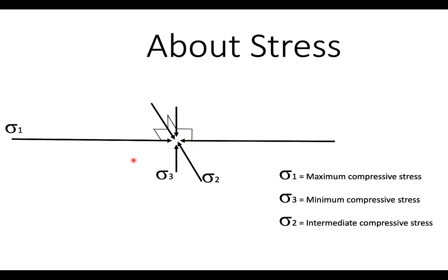And then sigma two is the intermediate compressive stress at right angles to that sigma one sigma three plane. Okay so I'm going to be talking about sigma one and sigma three in particular because that's what drives faulting. The orientation and differences between sigma one and sigma three.